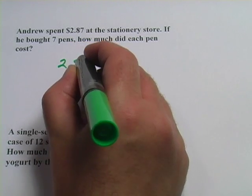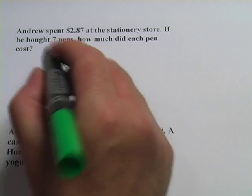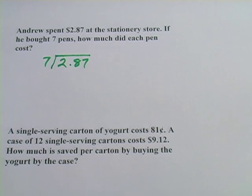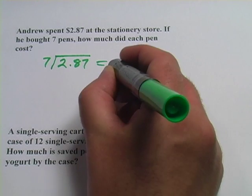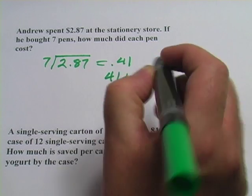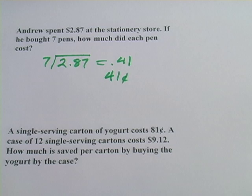So we take the $2.87 and we divide it by seven, and then we're going to get the cost of a single pen. I'm going to just use my calculator for that. So $2.87 divided by seven is $0.41. So $0.41 per pen, and that's our unit cost.